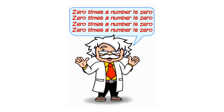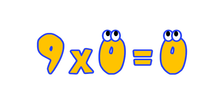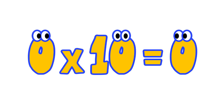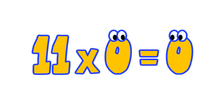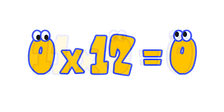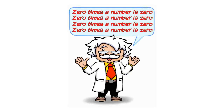Zero times any number is zero. Nine times zero is zero. Zero times ten is zero. Eleven times zero is zero. Zero times twelve is zero. Zero times any number is zero.